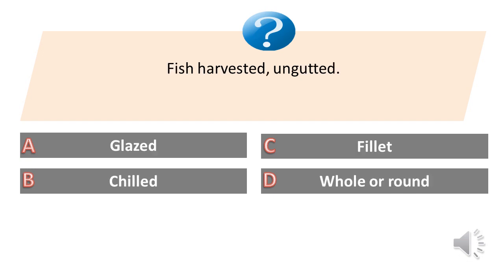Fish harvested, ungutted. A. Glazed. B. Chilled. C. Fillet. D. Whole or round. Answer is D. Whole or round.